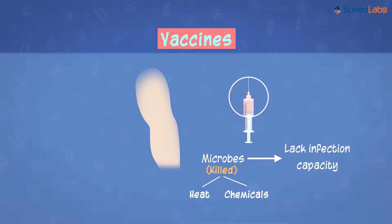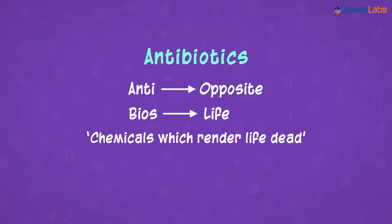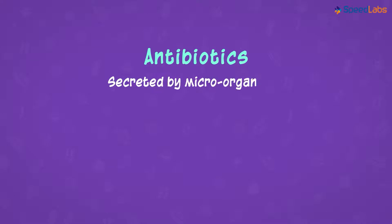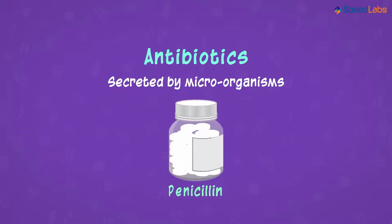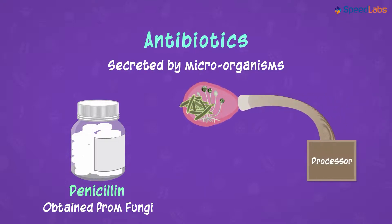Just like vaccines help to prevent diseases, we have antibiotics that help in curing diseases. As the name suggests, 'anti' means opposite and 'bios' means life, so antibiotics are chemicals which render life dead. Antibiotics are secreted by microorganisms — various bacteria and fungi secrete potentially harmful chemicals towards other organisms in their vicinity. The most widely used antibiotic is penicillin, obtained from a particular group of fungi. Several bacteria and other fungi also secrete potential antibiotics, which are extracted and processed to manufacture consumable medicines. Thus, another boon of microbes to us is the secretion of antibiotics.